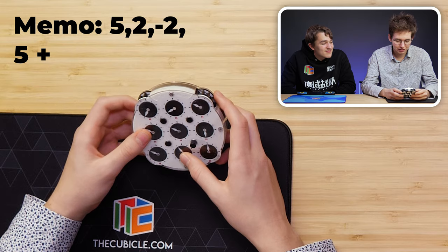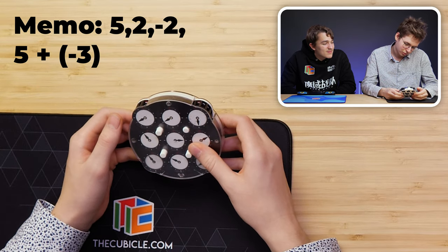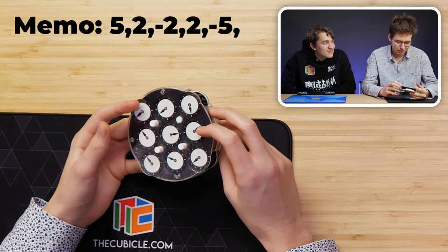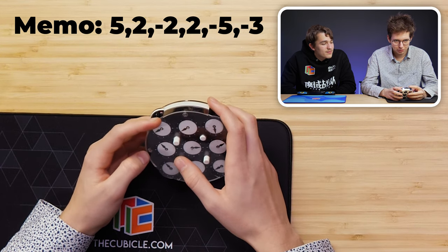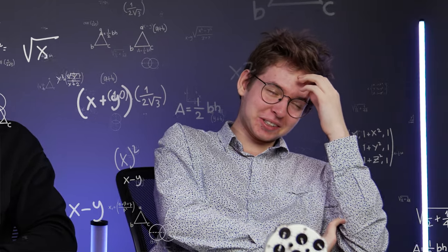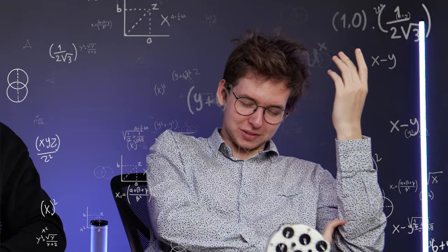And then you go five, then minus three, so that's two. Then go like that — minus five. So it's two, minus five, and minus three. So the full memo is: first side — five, two, minus two; second side — two, minus five, minus three. How do you memorize six numbers though? This is very hard. Since you're just learning, just brute force it — review it a lot of times.